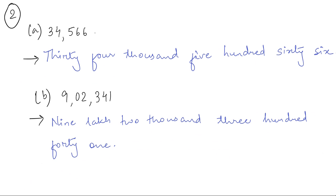Now let us move to question number 2. The question is: write the following in words. The first one is 34,566, so you just write the number name: thirty-four thousand five hundred sixty-six. Similarly, number (b) is 9,02,341, which means nine lakh two thousand three hundred forty-one.